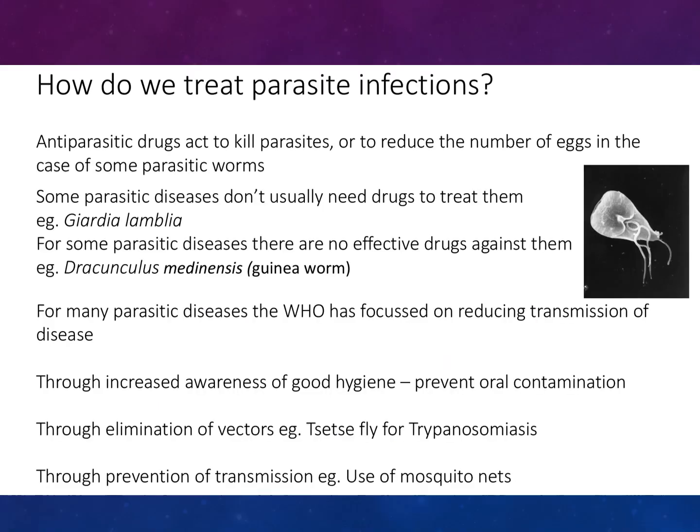So how do we treat parasitic infections? Antiparasitic drugs are used to kill parasites, or to reduce the number of eggs in some cases of parasitic worms. Some parasitic diseases don't usually need drugs to treat them, such as Giardia lamblia. For some parasitic diseases there are no effective drugs against them, such as Dracunculus medinensis, or Guinea worm. For many parasitic diseases, the World Health Organization is focused on reducing transmission of disease through increased awareness of good hygiene — this prevents oral contamination — elimination of vectors, such as the tsetse fly for trypanosomiasis, and prevention of transmission using mosquito nets.